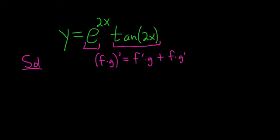In this case, this is our f and this is our g. So y prime is the derivative of the first piece. The first piece is e to the 2x, so its derivative is simply e to the 2x times the derivative of the inside function. The inside function is 2x, so here we put a 2. That's the chain rule.